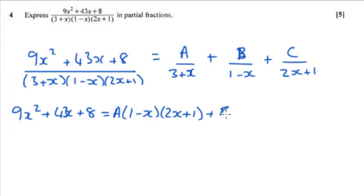So the B one will be the 3 + x and the 2x + 1, and the C will be the first two: 3 + x and 1 - x.